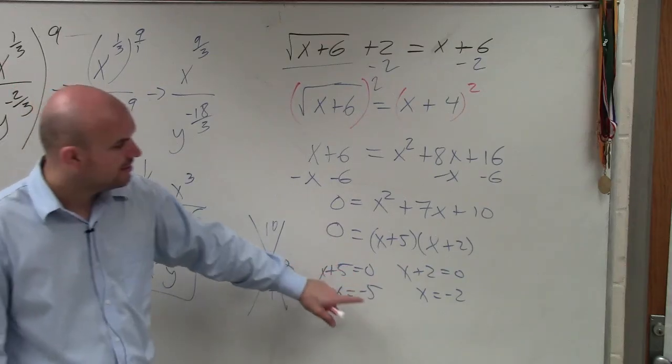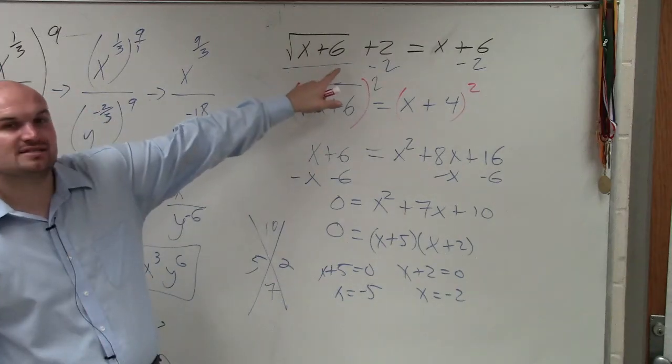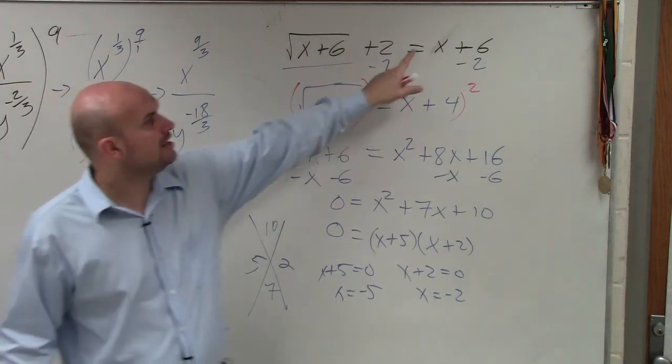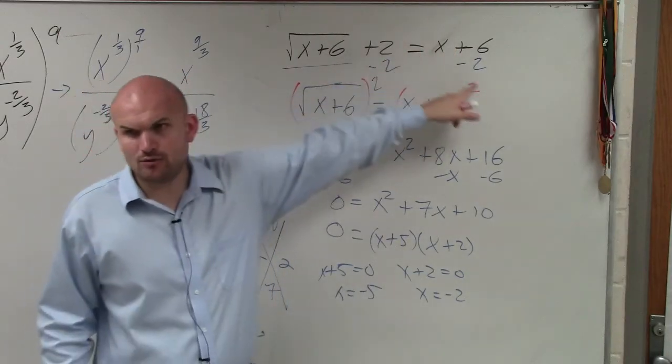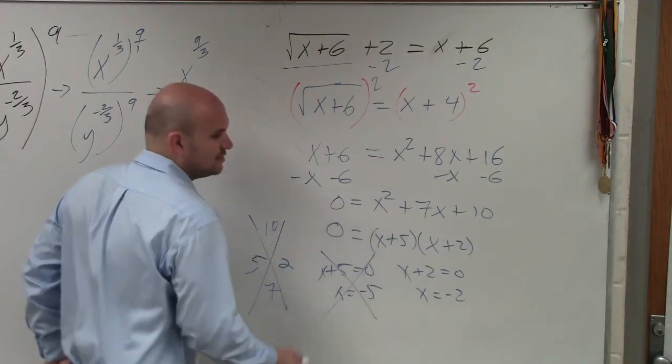You're going to take negative 5 and plug it back in for x. Negative 5 plus 6 is 1. The square root of 1 is 1. 1 plus 2 is 3. If you plug in negative 5 for x, you get 1. Does 3 equal 1? No. So this is not a solution.